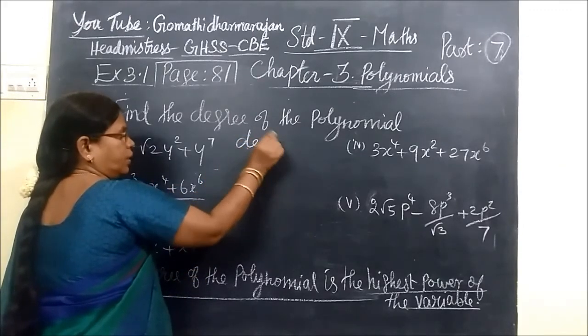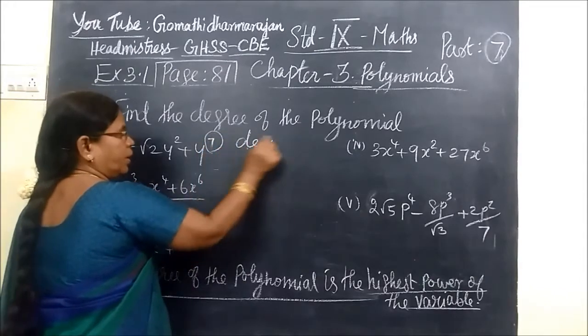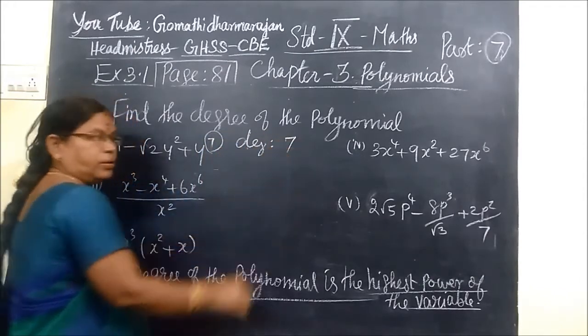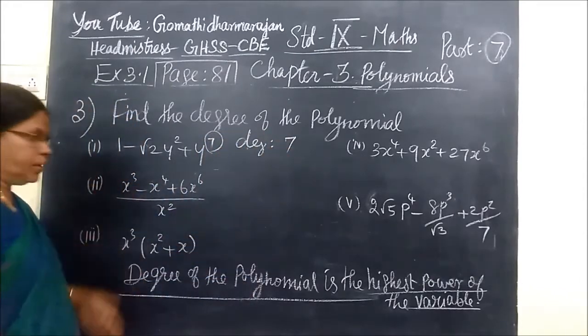So here degree equals 7. This is the highest power. So the degree of the polynomial is 7.